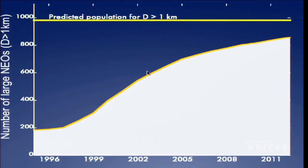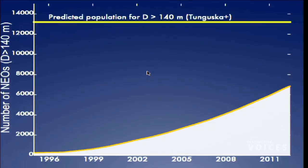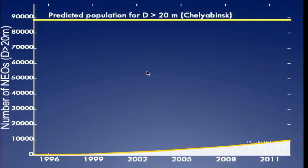For something the size of Tunguska — around 100 meters — there are predicted to be about 13,000 in near-Earth space, and we've discovered around 7,000 to 8,000. That line is ticking up and we're doing better every year. For Chelyabinsk-sized objects at only 20 meters, we really don't have a handle on the population size — could be hundreds of thousands. We just don't know yet, and Chelyabinsk is actually helping us figure that out.